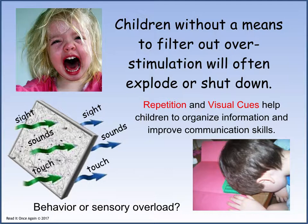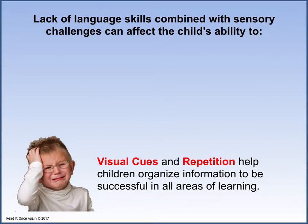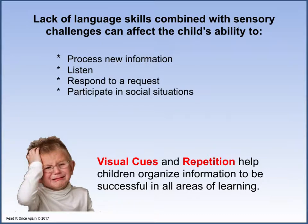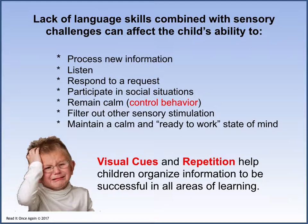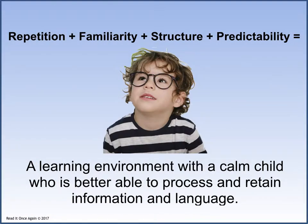Read It Once Again's strategy of repetition and use of visual cues will help children make great gains in the area of receptive and expressive language and improve their ability to communicate their needs. The lack of language skills combined with sensory challenges can affect the child's ability to process new information, listen, respond to requests, participate in social situations, remain calm and control their behavior, filter out other sensory stimulation, and maintain a calm and ready-to-work state of mind. Visual cues and repetition help children organize information to be successful in all areas of learning. Our goal is to provide a calm learning environment and eliminate unnecessary anxiety. Read It Once Again provides repetition, which fosters familiarity, adds structure and predictability, and can have a positive effect on the child's ability to cope with sensory issues.